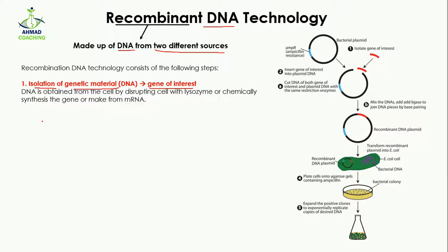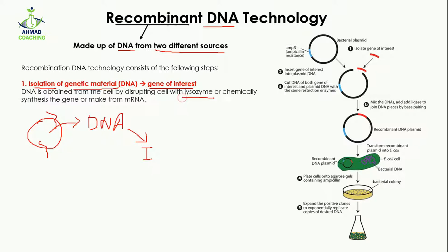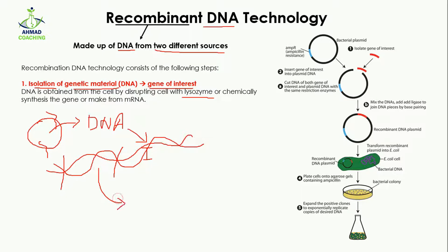For example, we have a cell here and you will isolate the DNA. From the DNA you are going to get your gene of interest, which is insulin. To get this, you will disrupt the cell by the help of some enzymes — for example, lysozyme — which will disrupt the cell and then the DNA will come out. The whole DNA is there, and just this small part is the insulin gene, so you will remove this small part.